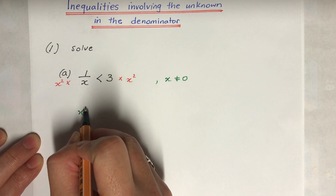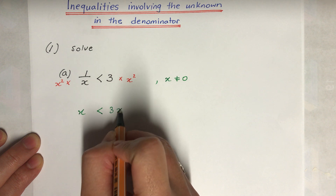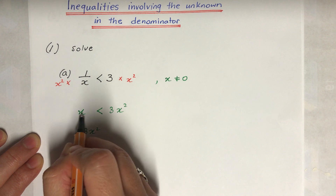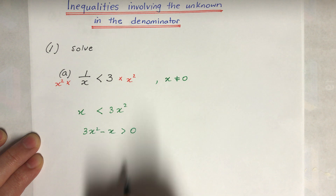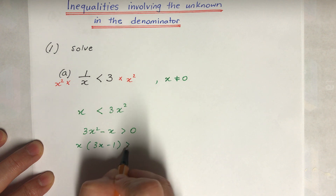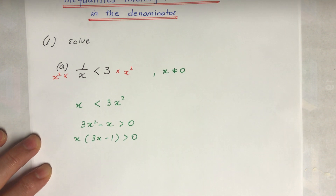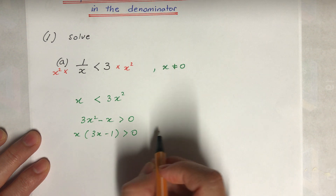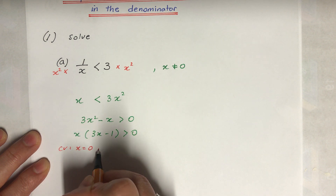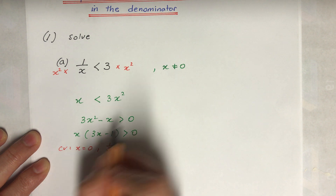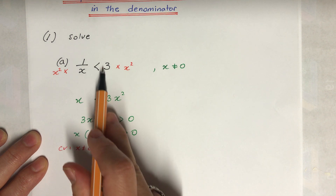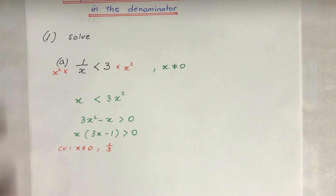After multiplying by x², we get one less power on the left-hand side and the right-hand side simplifies accordingly. Moving terms across gives us a factorized expression, which is a parabola. The critical points are x = 0 and x = 1/3. Remember, x cannot be zero.